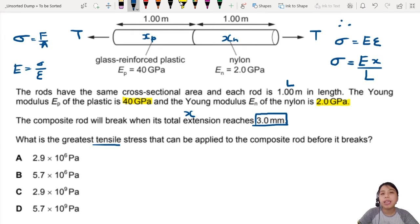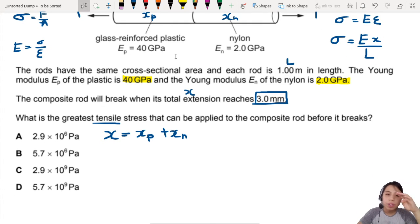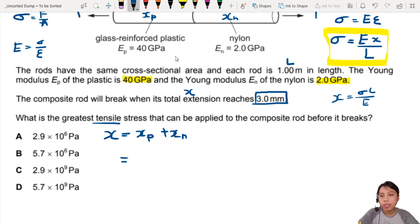The key thing is maximum extension reaches 3mm - that will be the limit where you have greatest tensile stress. So extension will be: plastic will extend a little bit, nylon will also extend a little bit. But how do you relate Young's modulus into it? We think about ratios. So Xp, what will that be based on this? You've got to rearrange a little bit. Xp will be sigma L over E. So let's write a note here: X will be sigma L over E.